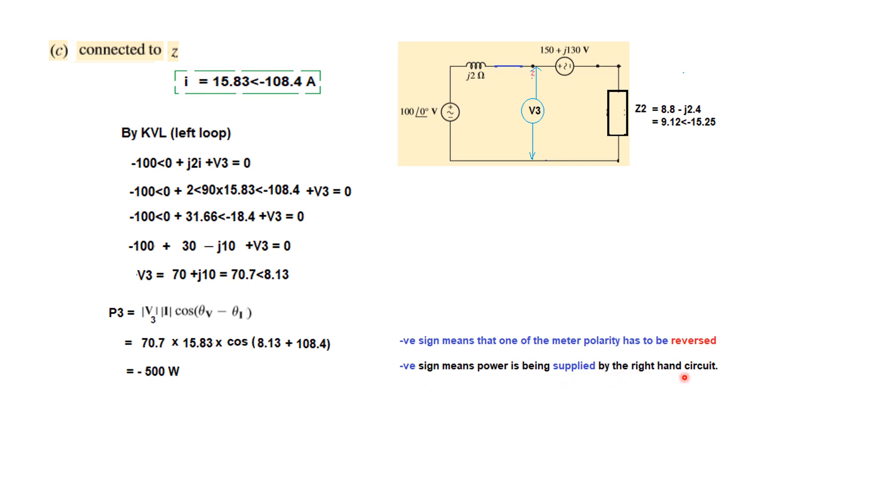I'm saying it is by the right hand side because this voltage source is bigger than the left hand voltage source. So the power is being supplied by the right hand side, and that means we can say that the power is being absorbed by the left hand side, or primarily this battery. So the power is being absorbed by this battery, 500 watts. I hope this gives you an understanding of how to solve this type of problem. Thank you.